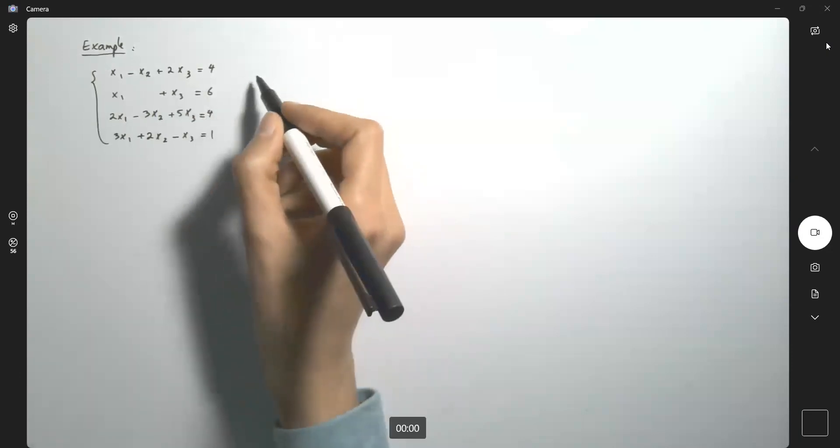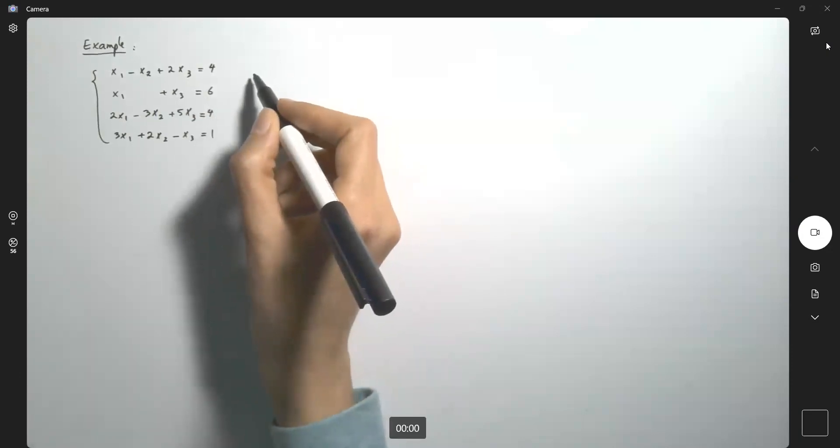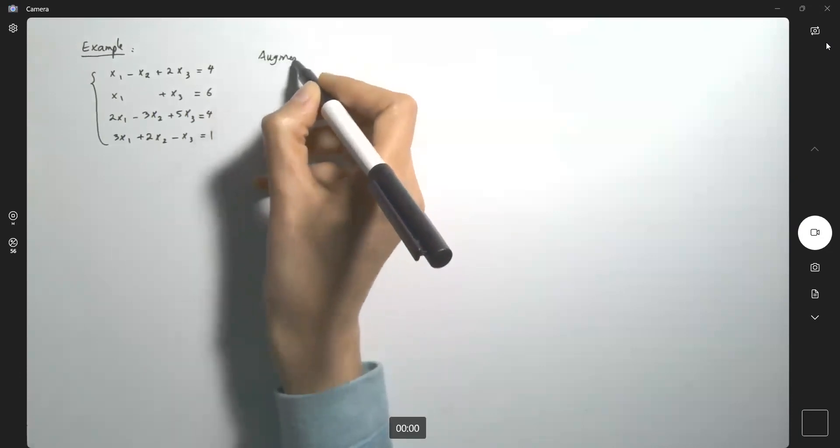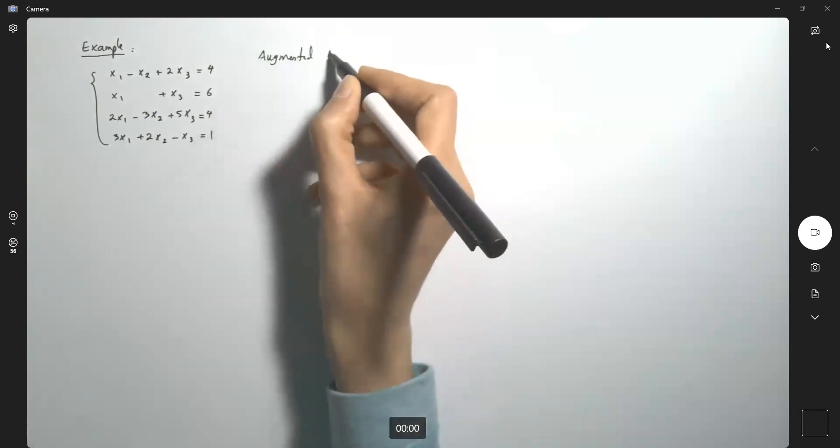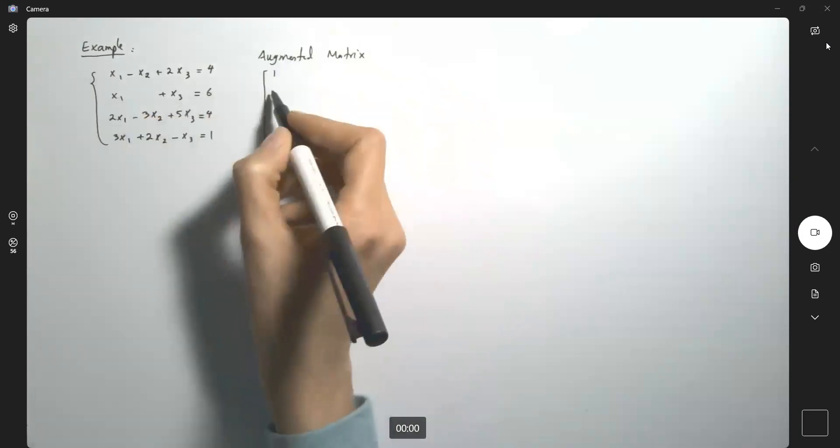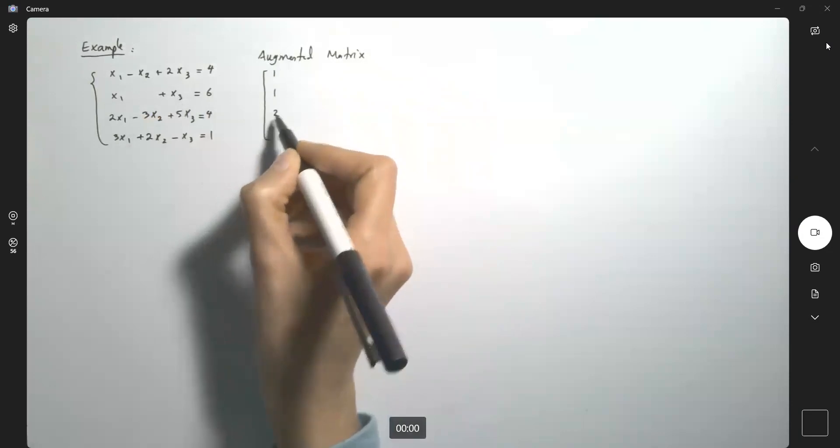So you can write this in augmented matrix format. The matrix is written this way. So as you know, the very first column are the coefficients of x1. So you have one, another one, two, and three.